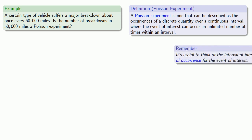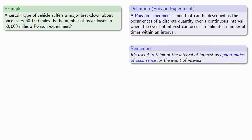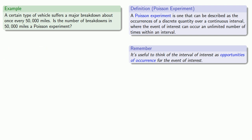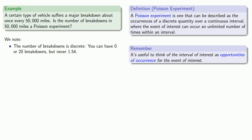It's useful to think about the interval of interest as the opportunities of occurrence for the event of interest. And so we might make the following observations. The number of breakdowns is discrete — you can have 0 or 20 breakdowns, but never 1.54.